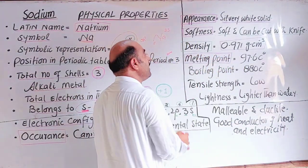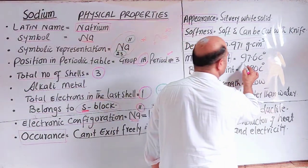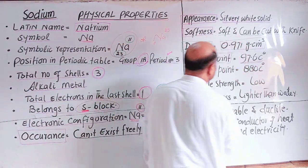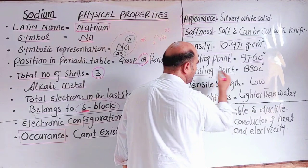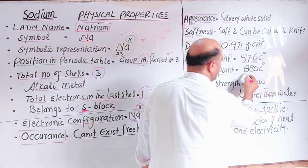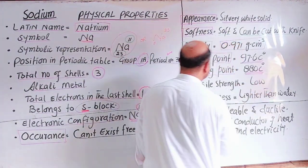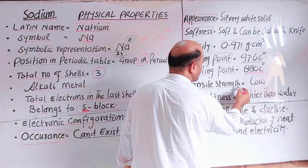Melting point: At low temperature, 97.6 degrees Celsius, sodium will melt. Boiling point: It will boil at 888 degrees Celsius.